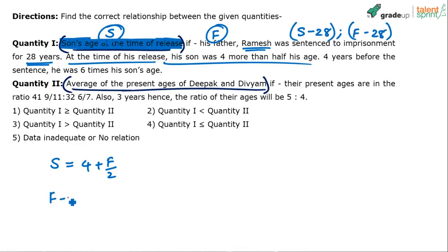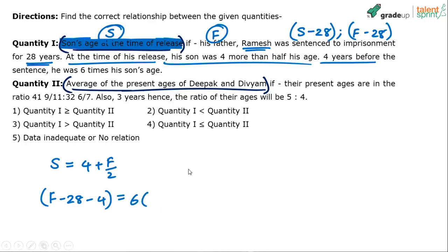4 years before the sentencing means further subtraction by 4 years. So 4 years before the sentence, the father was 6 times his son's age. The father's age would be F-32, and he was 6 times the son's age. Son's age at the time of sentencing was S-28, so 4 years before that, the son's age was S-32.